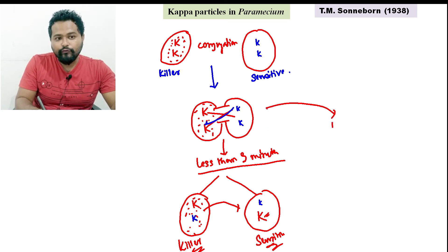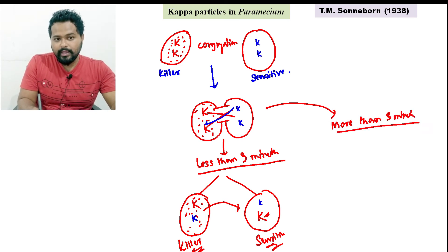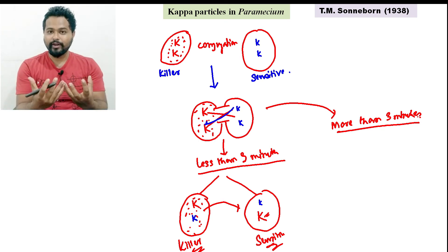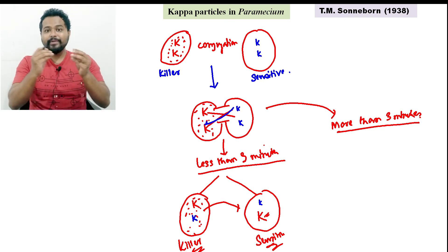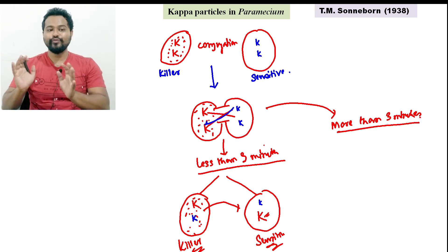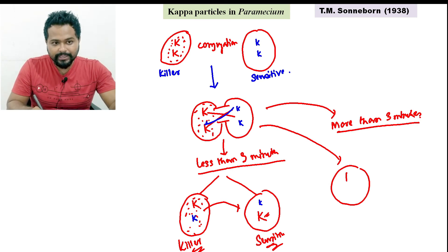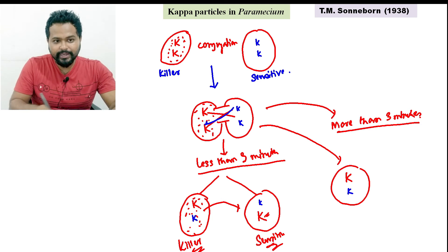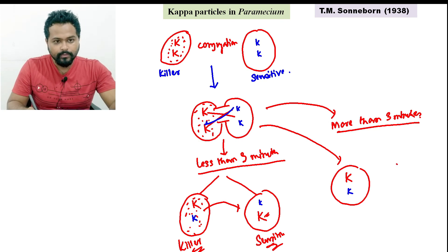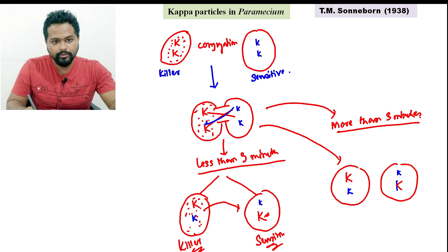If conjugation is allowed for more than three minutes, then both nuclear material and cytoplasm are exchanged. In that condition, if capital K was present and small k was there, it will change — because the Paramecium now receives cytoplasm with kappa particles.